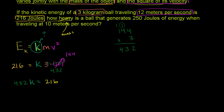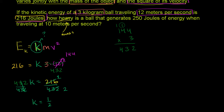To solve for k, divide both sides by 432. We get k equals 216 over 432. If you double 216 you get 432, so this simplifies to 1/2. K equals 1/2. Now we're ready to answer the second part — we used the first sentence to figure out k.